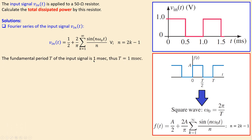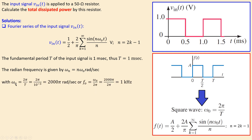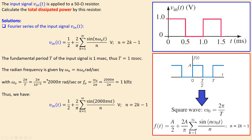The fundamental frequency corresponds to a period of 1 millisecond, giving omega_0 = 2000π rad/s, or equivalently 1 kHz in frequency. Substituting the fundamental frequency into the expression gives us the Fourier series for V_in, which we will use — both the DC and AC terms — to determine the power dissipated in the 50 ohm resistor.